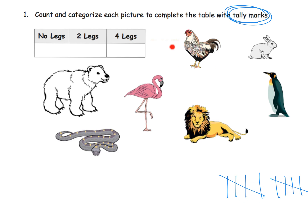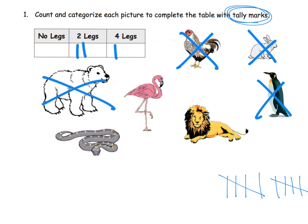This animal has two legs, so I'm going to cross him off and put a tally there. This one has four legs — tally in the four column. This one has two legs — tally in the two. The polar bear has four legs. The flamingo has two legs. The lion has four legs. And lastly, a snake has no legs, so we put a tally right there.